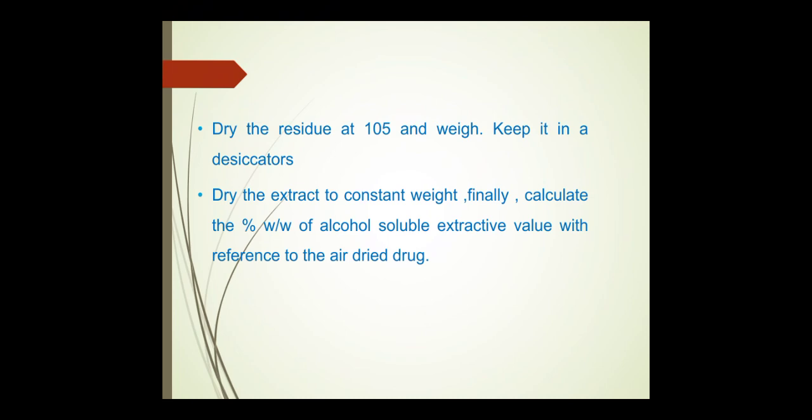Solubility: the presence of adulterants in a drug can be indicated by solubility studies. Example: castor oil is soluble only in 3 volumes of 90% alcohol, while the adulterated form may show good solubility in alcohol. Asafoetida is soluble in carbon disulfide; balsam of Peru is soluble in chloroform solution; colophony is freely soluble in light petroleum.